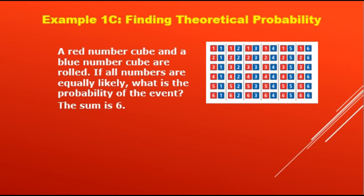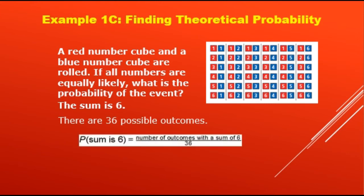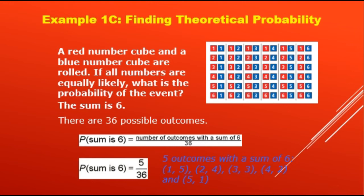If two number cubes are rolled, there are 36 possible outcomes. For our formula, P(sum is 6) = number of outcomes with a sum of 6 over 36. We have 5 outcomes with a sum of 6: 1 and 5, 2 and 4, 3 and 3, 4 and 2, and 5 and 1. So P(sum is 6) = 5 over 36.